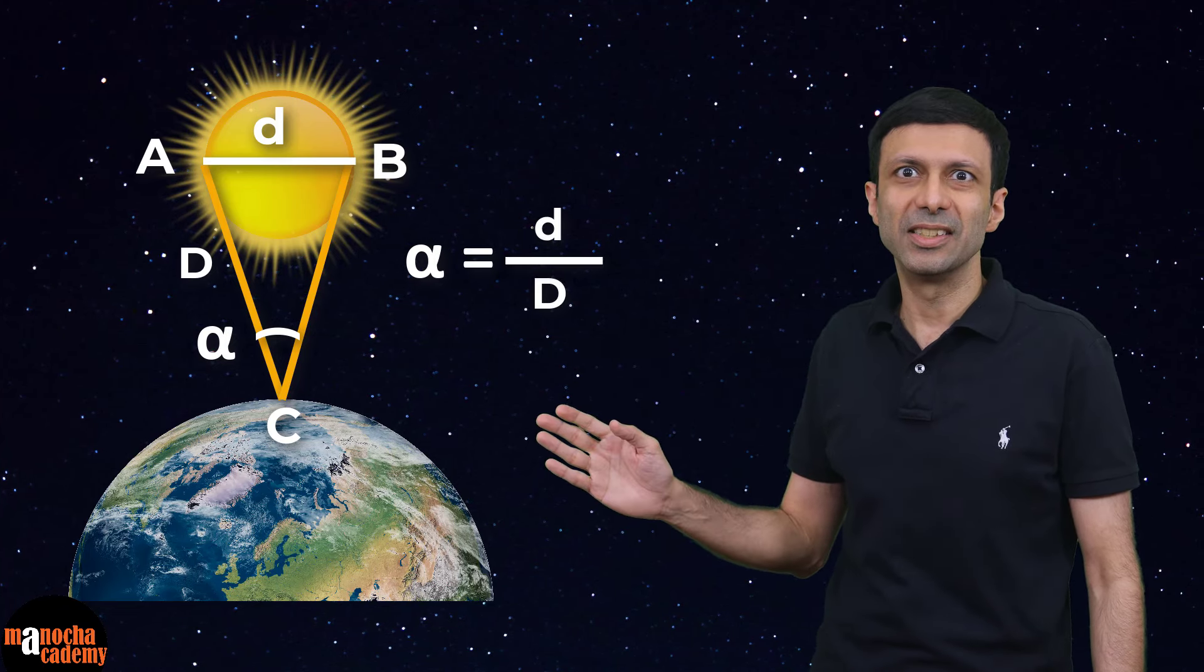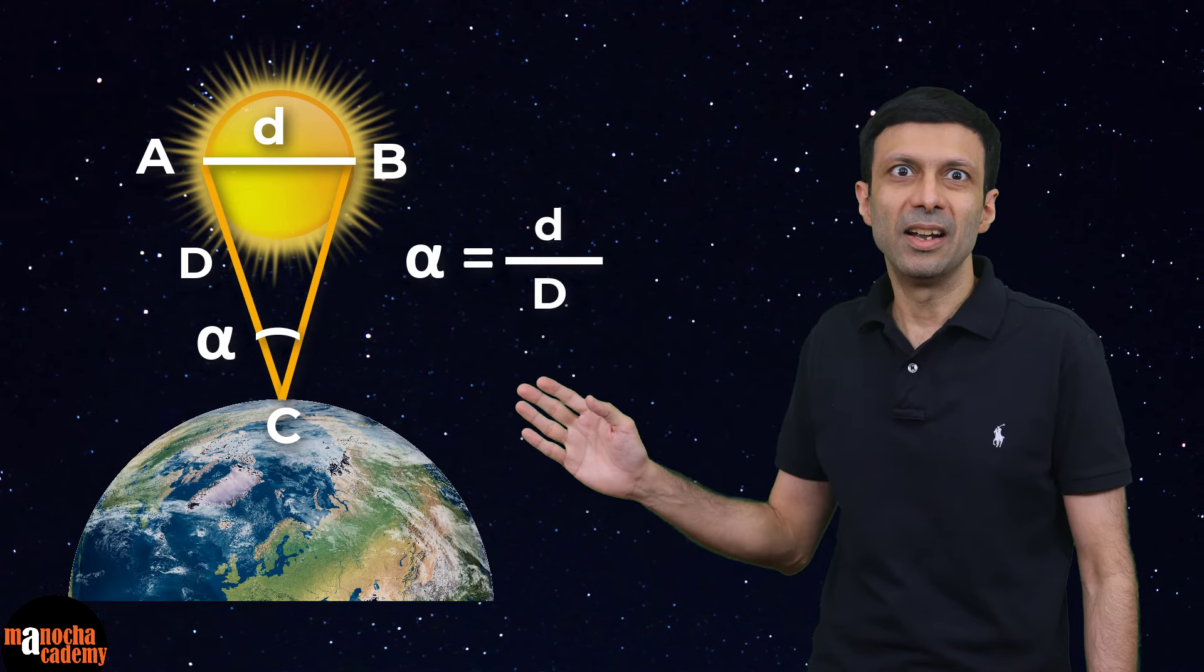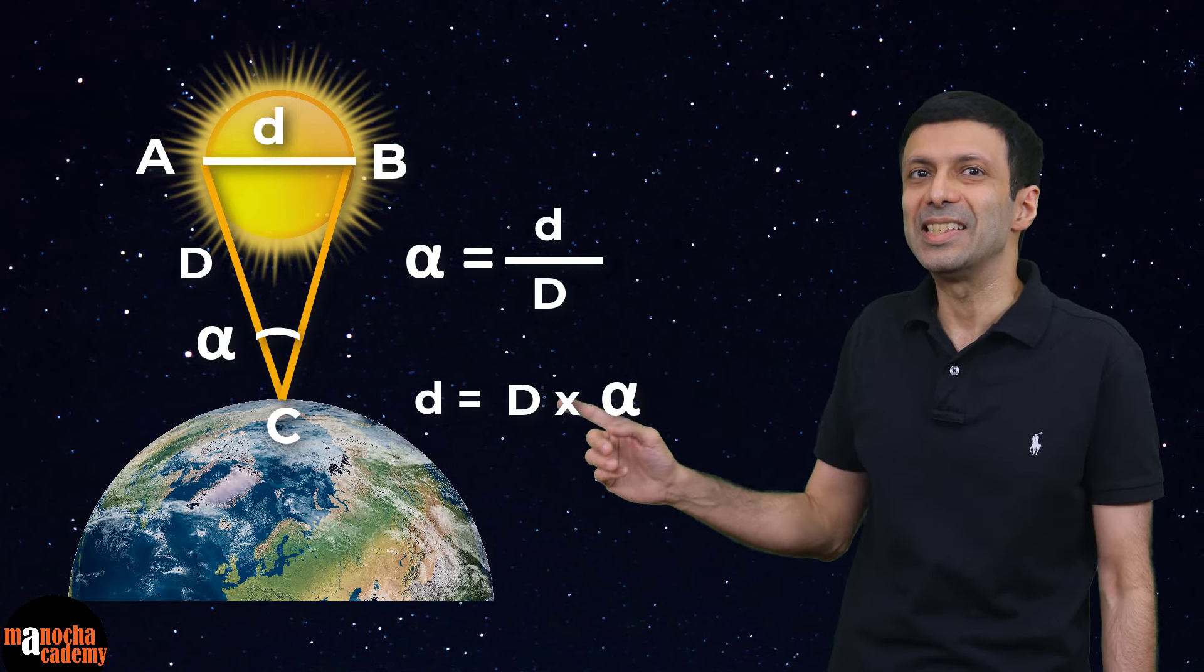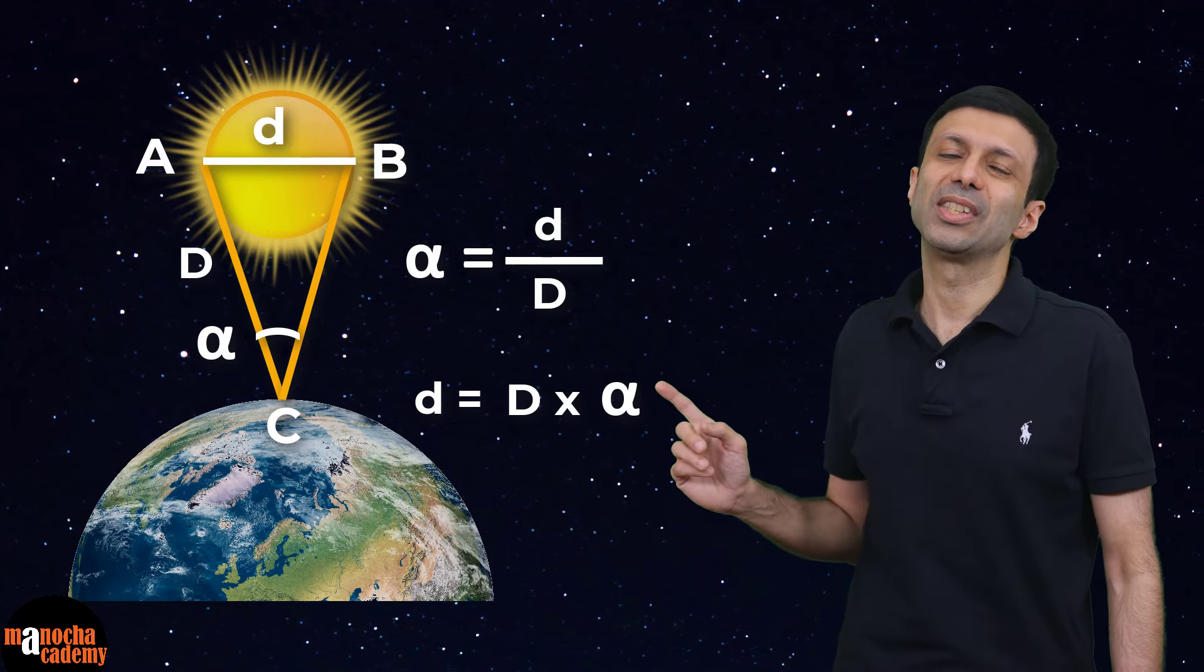Let's say we know the distance of the sun D from the earth. So we can use the same formula angle alpha in radians is diameter D divided by the distance of the sun, which is denoted by capital D. So rearranging the diameter of the sun denoted by small d is capital D times alpha.